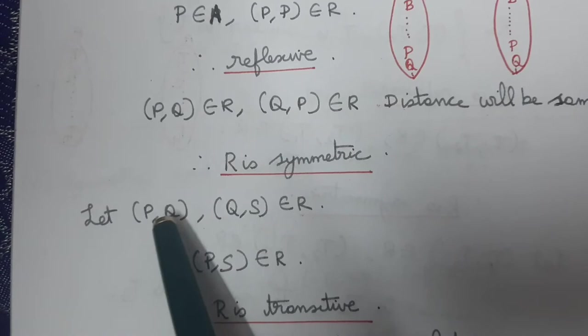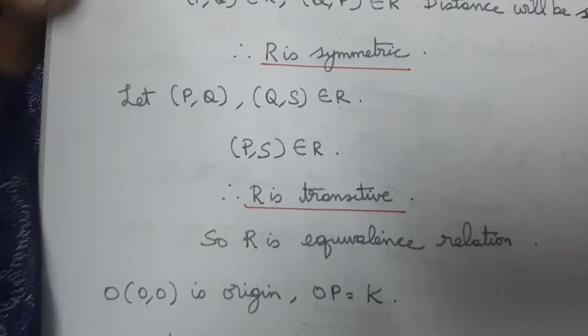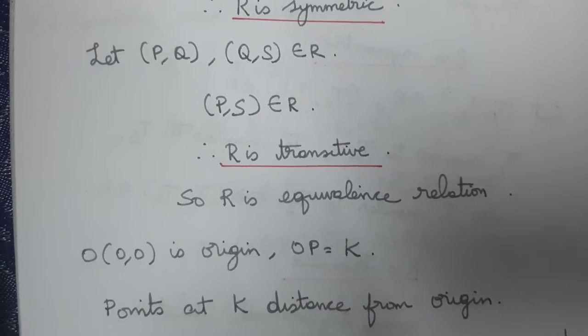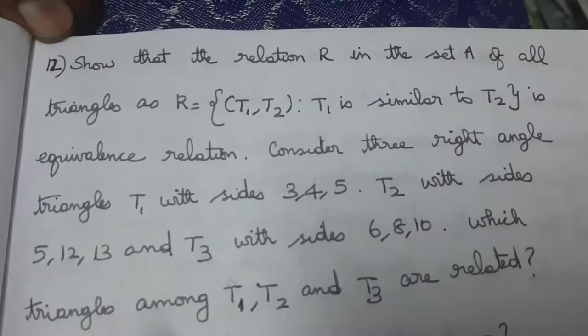R is transitive. So R is an equivalence relation. The set of all points related to point P are those at equal distance from the origin — that is, a circle with the origin as centre passing through P.